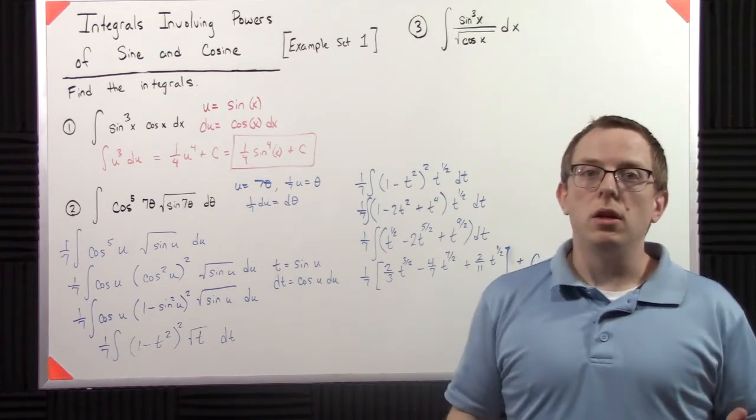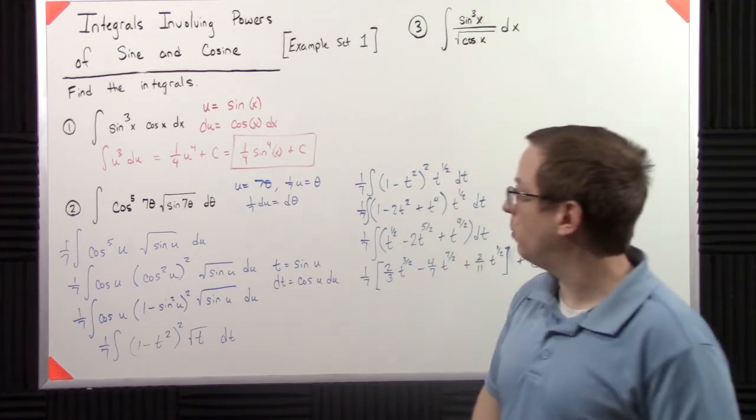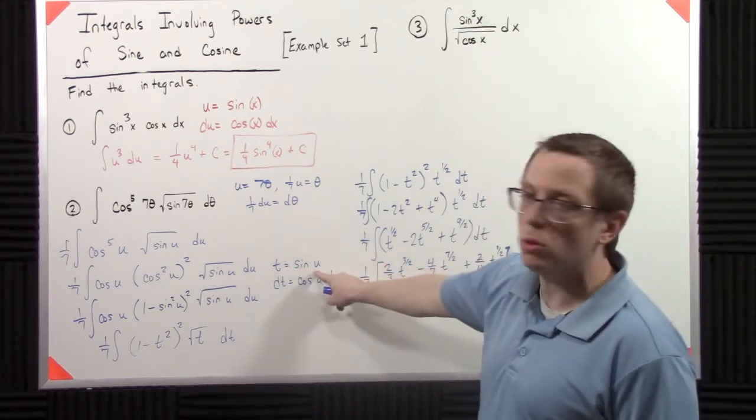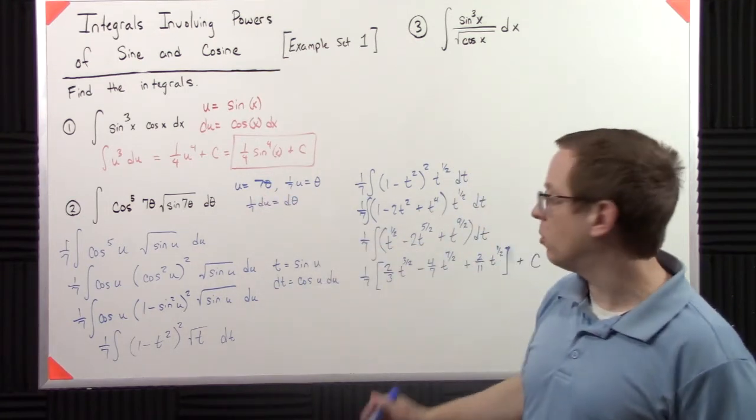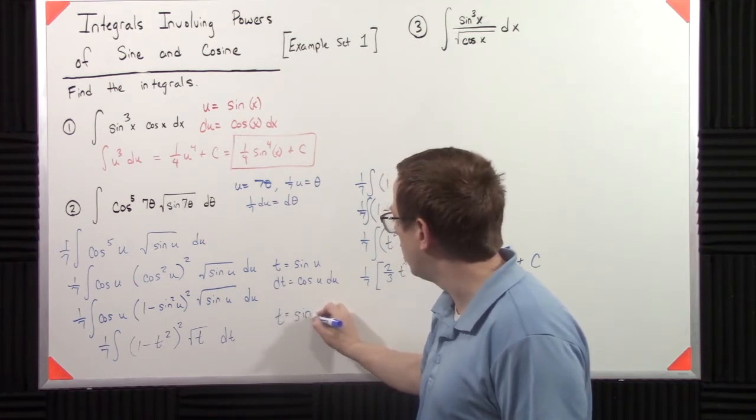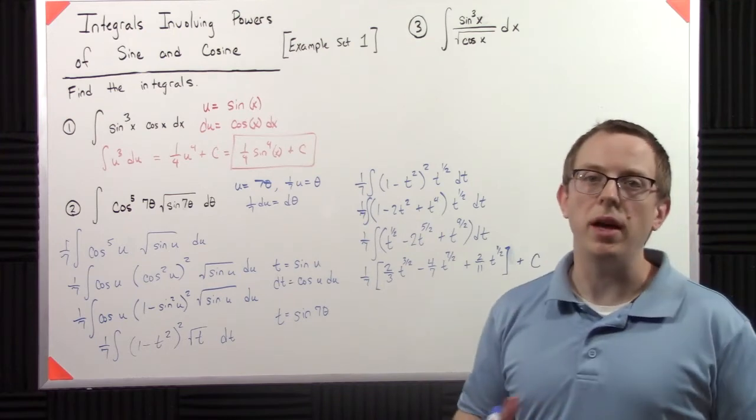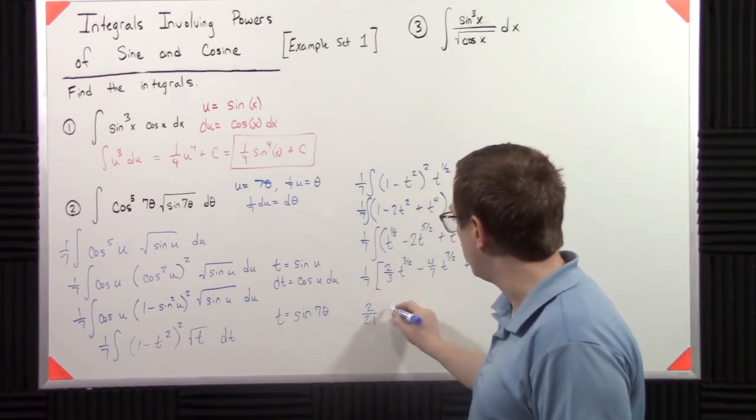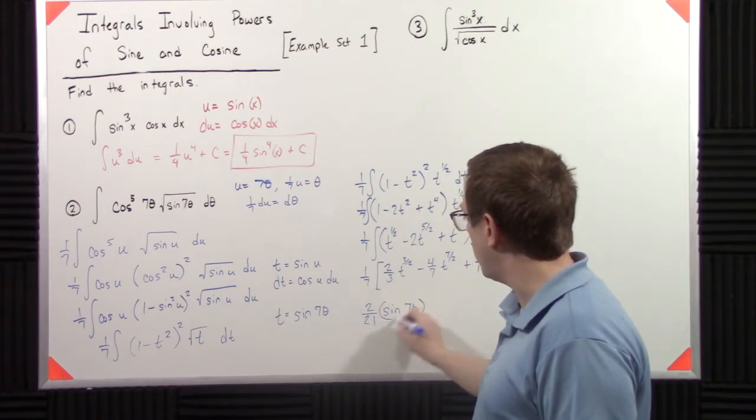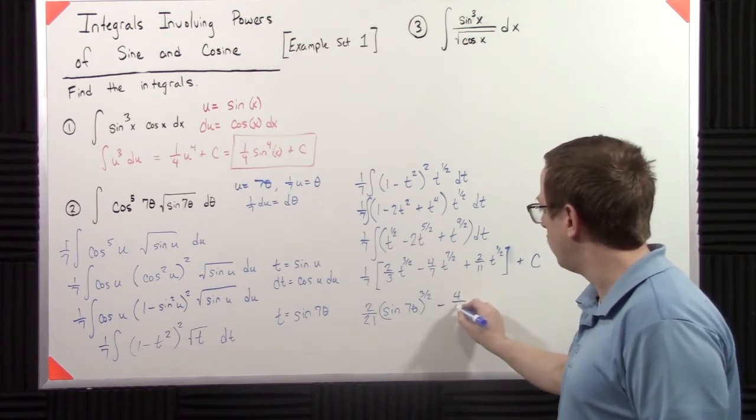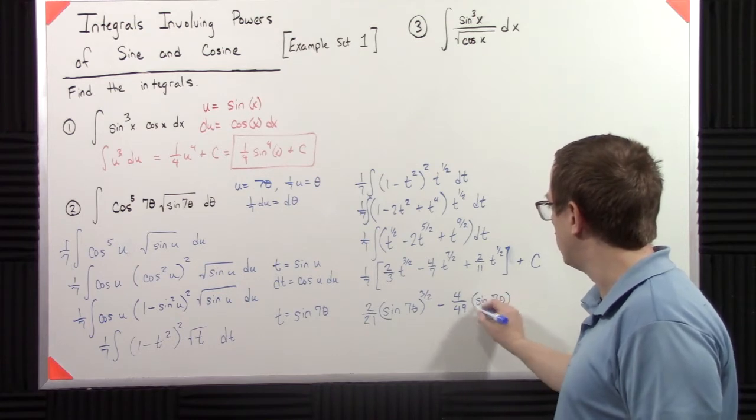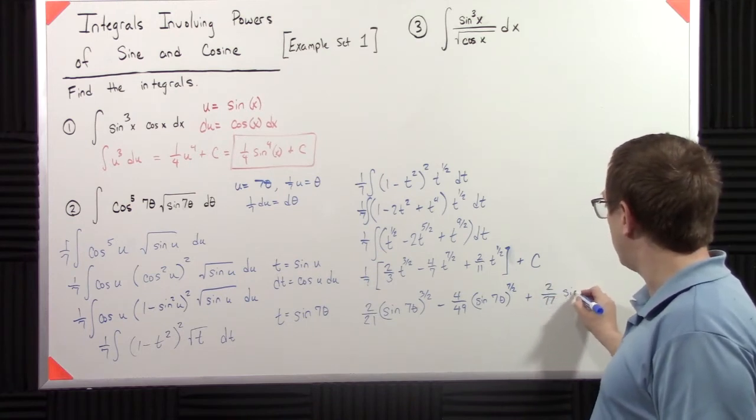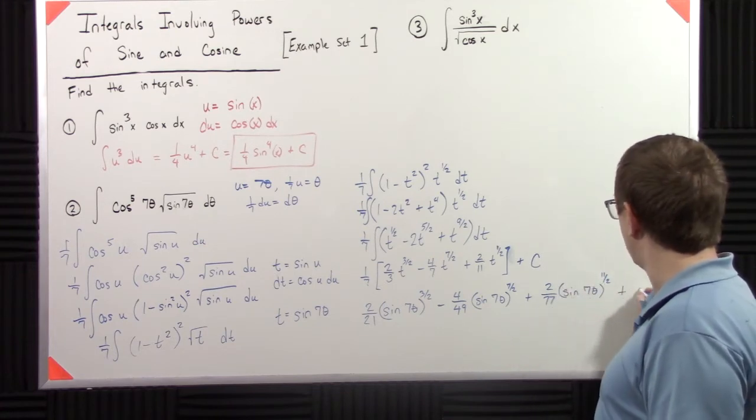Now, we have t's, but we didn't start in t's. We started actually in thetas. And we went through two substitutions. So for every t, I have to convert it to sine of u. And for every u, I have to convert it to seven theta. So realistically, t is sine of seven theta. That allows us not to have to make a double back substitution. We can just go back to, so I'm going to distribute this one-seventh, so that gives me two-twenty-one sine seven theta to the three-halves, minus four-forty-ninths sine seven theta to the seven-halves, plus two-seventy-seventh sine seven theta to the eleven-halves, plus c.